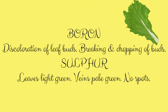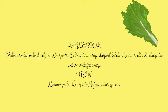Magnesium deficiency creates paleness from leaf edges, and there will be no spots, as in the case of sulfur deficiency. At the edges, we can see some cup-shaped folds, and during extreme deficiency, leaves will die and drop, and eventually the whole plant will die.